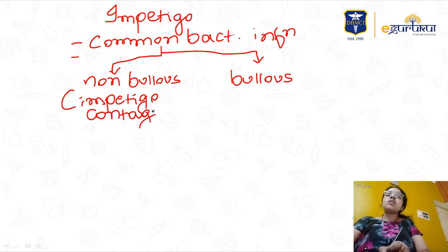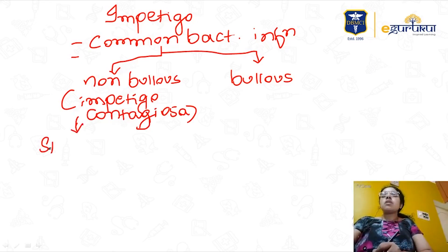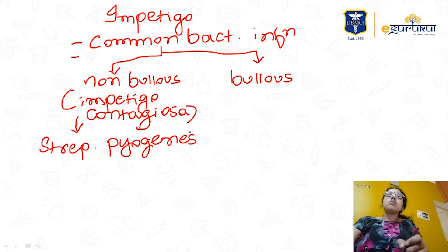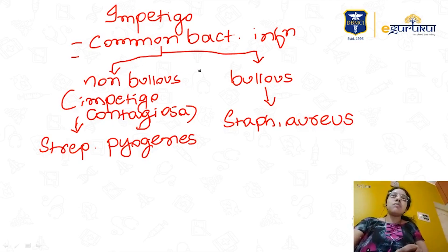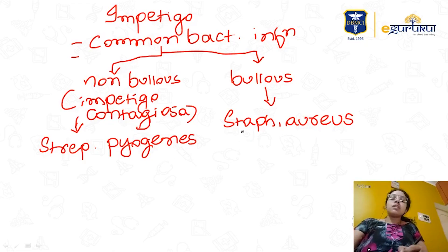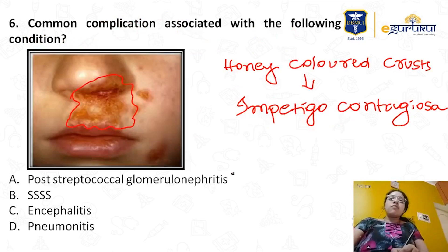Impetigo is a common bacterial infection. There are mainly two types: non-bullous (also called impetigo contagiosa) and bullous type. Non-bullous impetigo is most commonly caused by Streptococcus pyogenes. Bullous type is caused by Staphylococcus aureus. The picture shown is non-bullous type, so the correct complication is post-streptococcal glomerulonephritis, because it is caused by Streptococcus species.